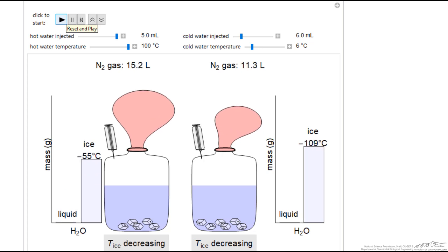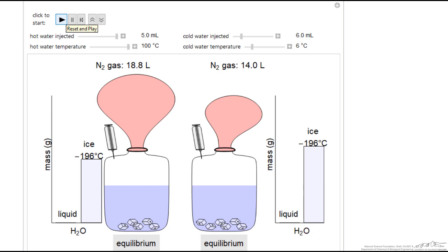And when we're finished, then it shows the final temperature and we have more nitrogen gas on the left because we had to cool down from a much higher temperature and that required more nitrogen to vaporize.